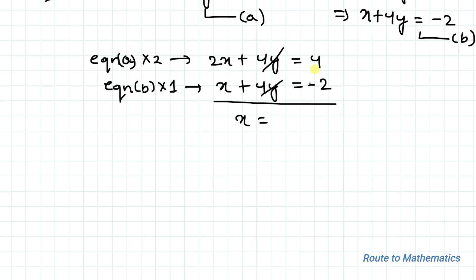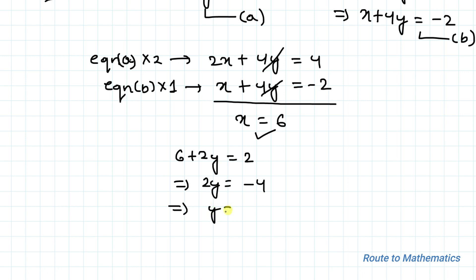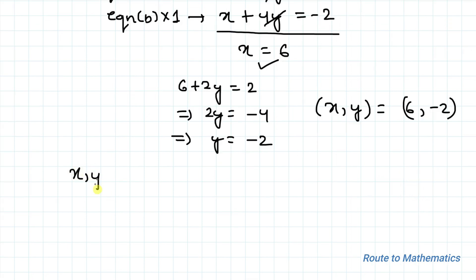Subtracting these two, the 4y terms cancel, giving x = 4 − (−2) = 6. Substituting x = 6 into equation a: 6 + 2y = 2, so 2y = −4, giving y = −2. This gives the solution (x, y) = (6, −2).